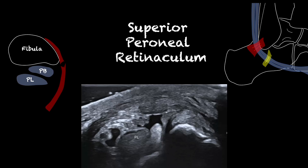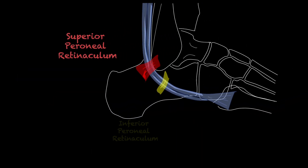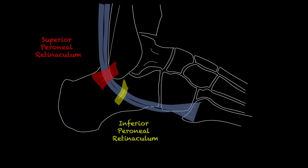A tear of the superior peroneal retinaculum often has surgical implications and as such is right up there in terms of its significance and importance to ankle ultrasound. The SPR, here in red, is formed from a confluence of the peroneal sheath and superficial fascia of the leg. Anteriorly it attaches to the fibular periosteum, which is contiguous with the superior extensor retinaculum. Posteriorly there are variable attachments to the calcaneus and Achilles.